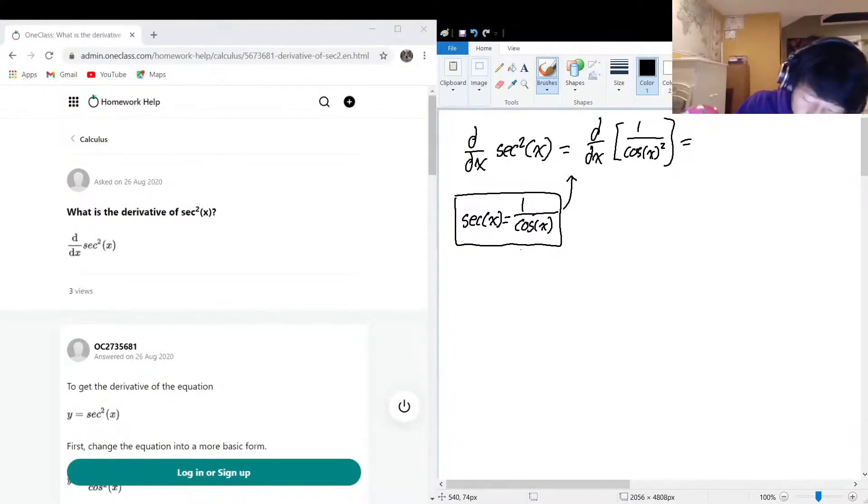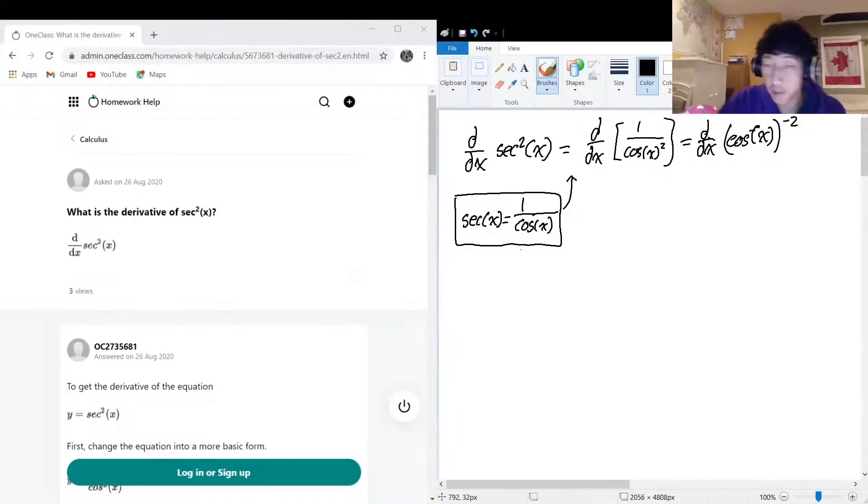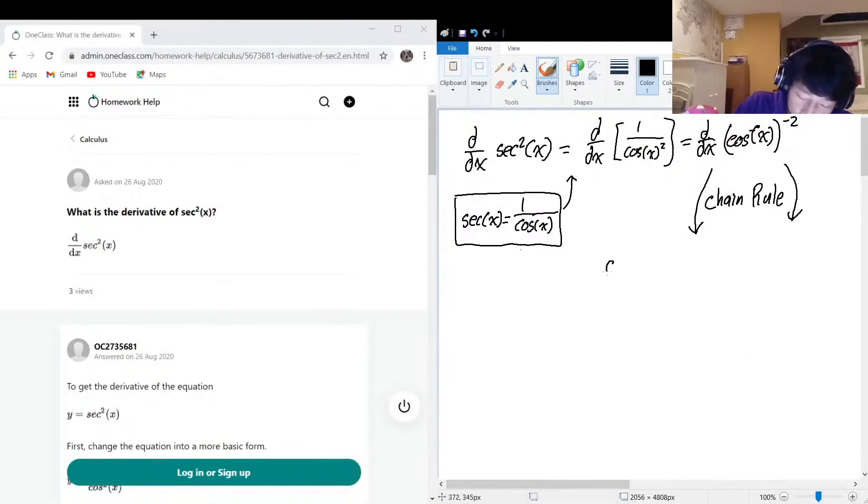Or we could also write this as d over dx of cos x to the power of negative 2. So let's just take the derivative of this, and in my opinion it should be a little bit more lightweight. So this is a situation where we want to use the chain rule.